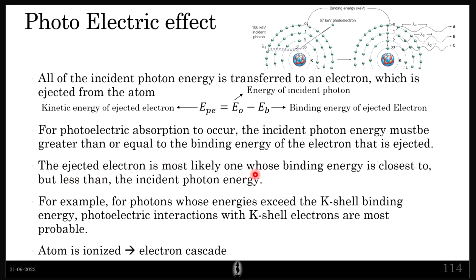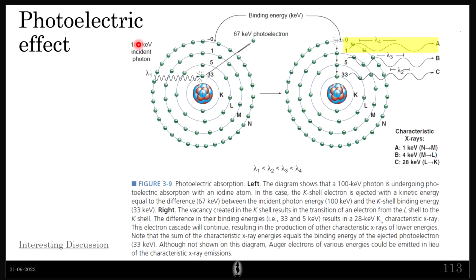The ejected electron is most likely the one whose binding energy is closest to but less than the incident photon energy. It is highly probable that a high-energy photon will interact with the K-shell electron. There is an interesting discussion about why specifically the K-shell electron is more probable to be emitted, which is worth exploring if you're curious.